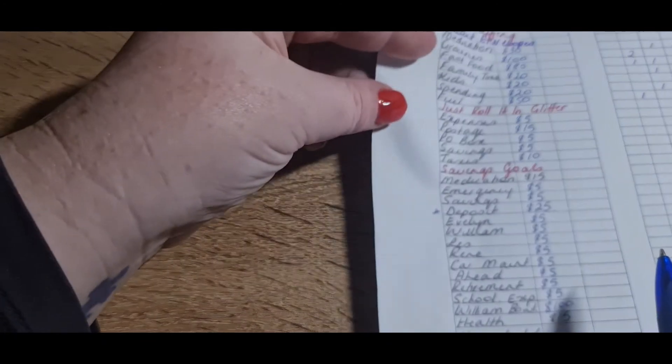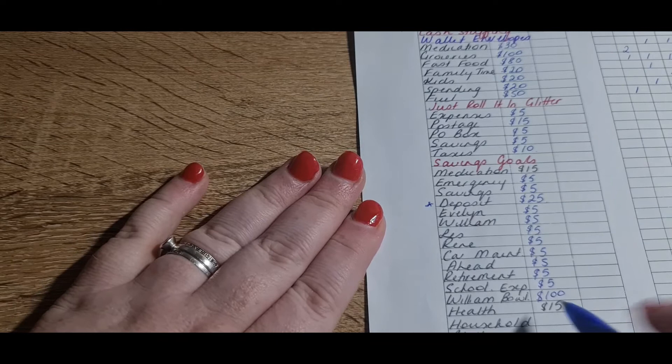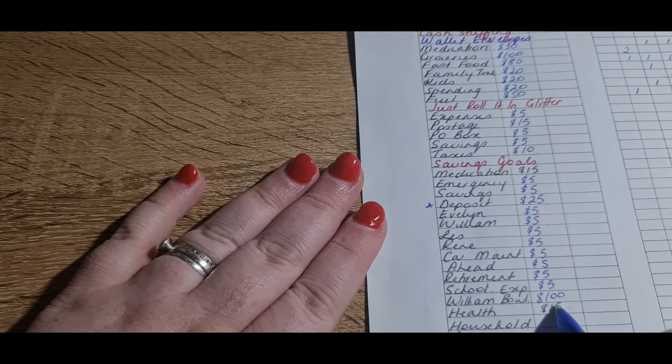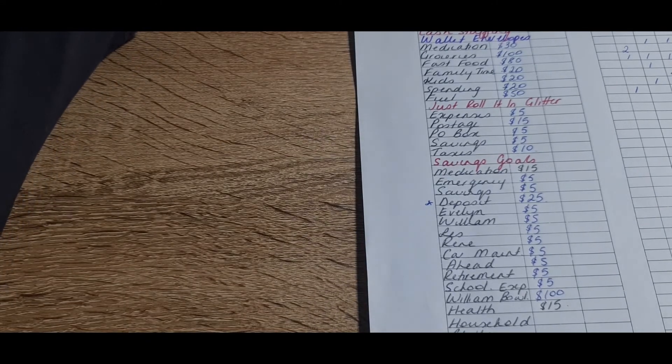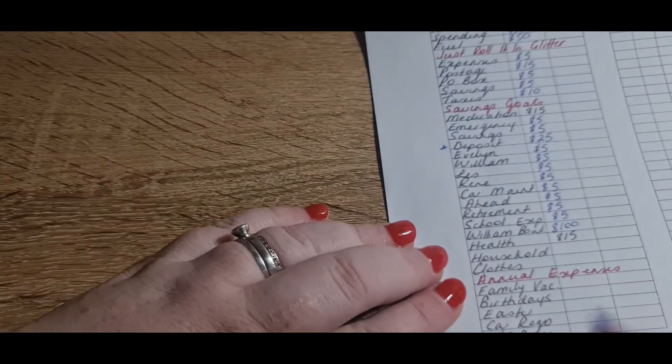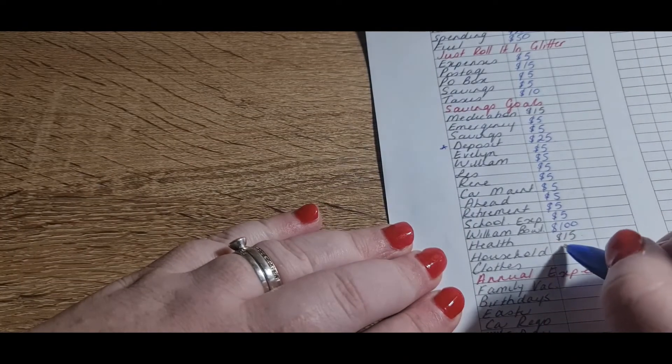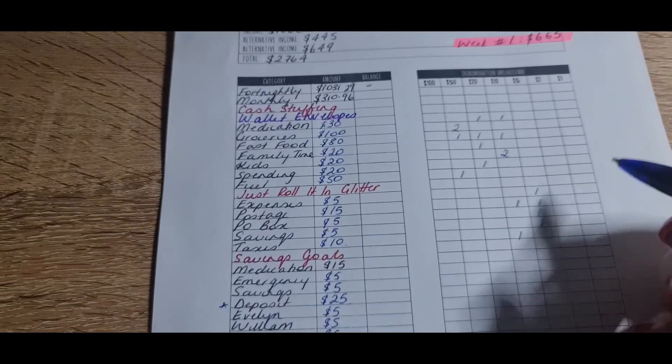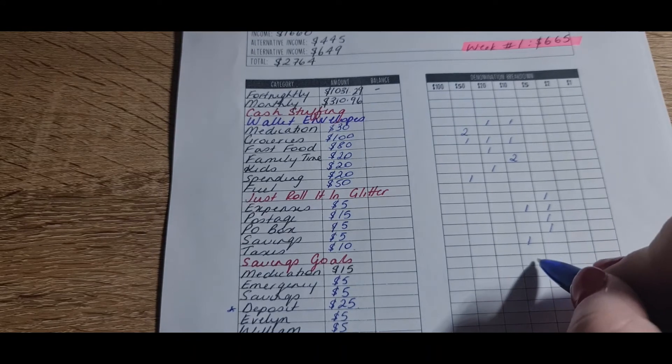My son and my husband go bowling every fortnight together. It's like a boys activity on a Saturday, so that gets $100. They go bowling and then they have lunch. Then household health is getting $15. That has also changed, which is why it's prefilled, because I have a medical appointment coming up, so I need to make sure I have enough money for that. Household is getting $5, and clothes is getting $5.